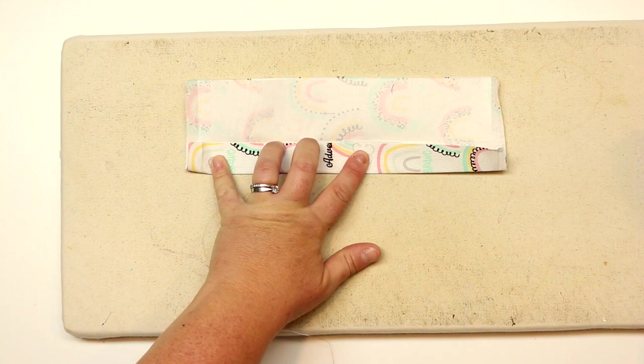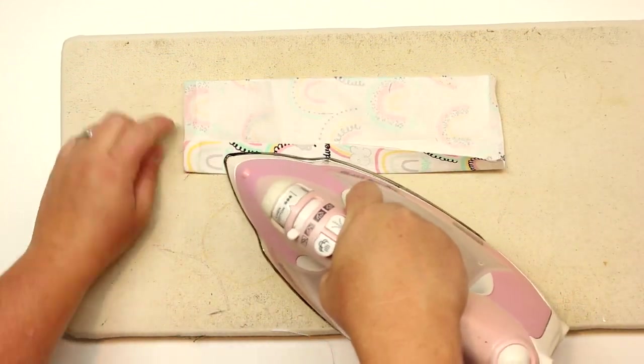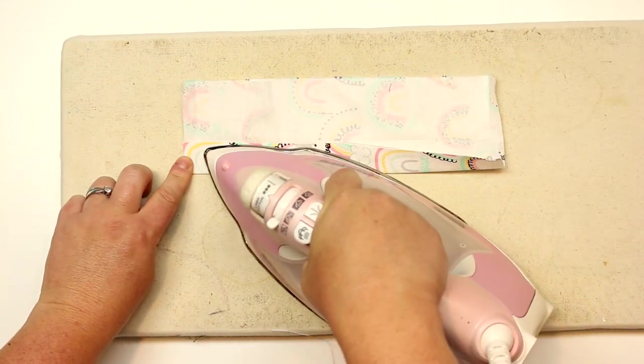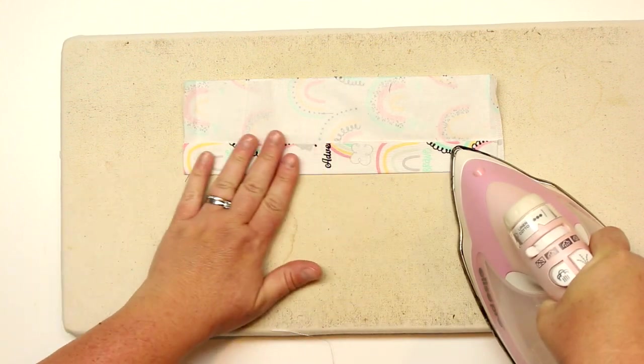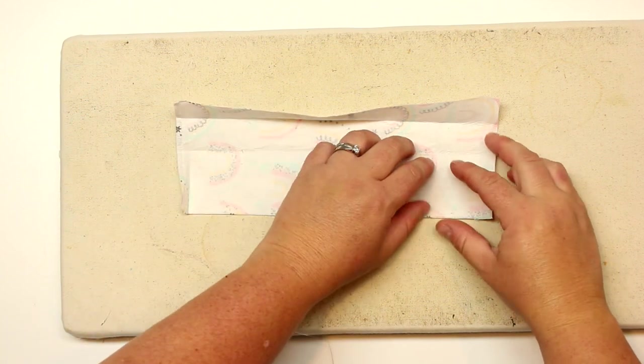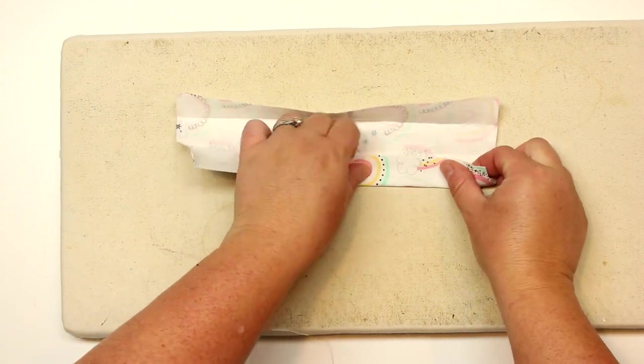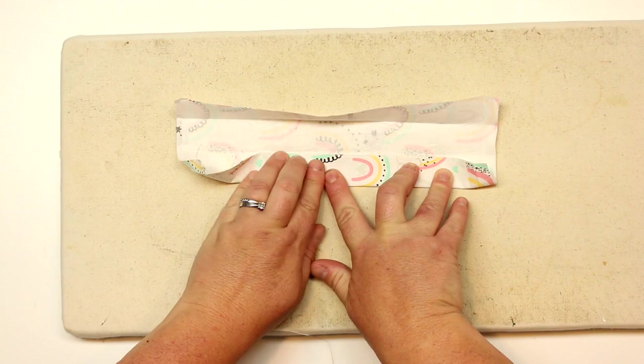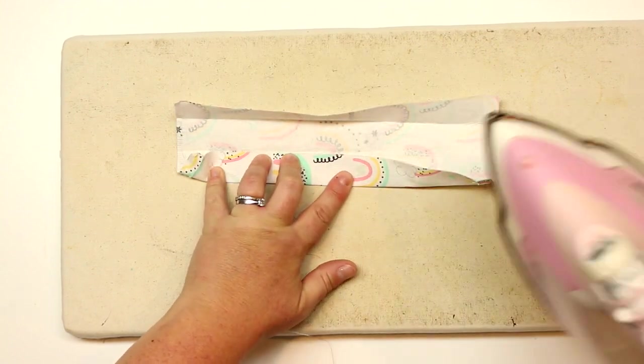Flip that and I'm going to fold in the other raw edge so that lines up with the center crease again.